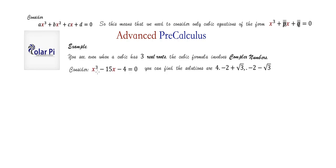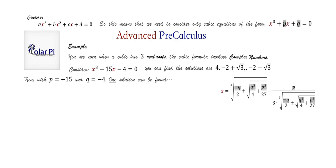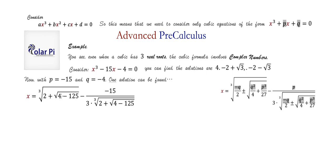In applying the cubic formula to this cubic to arrive at those real roots, we end up using complex numbers. For this cubic, p = -15 and q = -4. Plugging into the cubic formula, in one part we get 4 - 125 = -121 inside a square root, which is imaginary — so complex numbers appear.